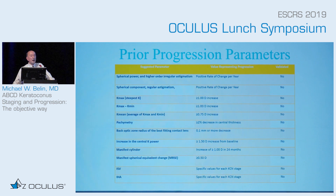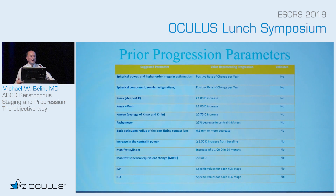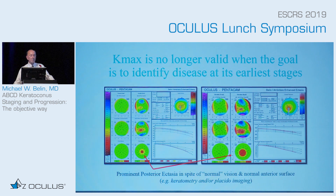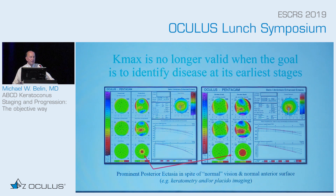If we look at all the prior progression parameters, except for pachymetry, they're all anterior surface parameters. So if we're waiting for further deterioration of the anterior surface, that means we're waiting until the patient loses more vision. K-max, which has been used in the past and is still being used in a number of studies, is really no longer a valid parameter if we want to identify disease at the earliest possible stage.